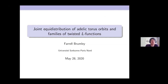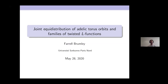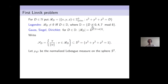Today we have the pleasure of having Professor Farrell Bromley from Sorbonne University in Paris, who is going to speak about joint equidistribution of adelic torus orbits and families of twisted L-functions. Thank you for the invitation. I'll be speaking on some variants of a very popular question in analytic number theory and ergodic theory — Linnik problems — and I'll start by recalling some of the classical versions.